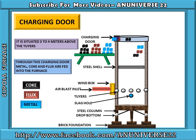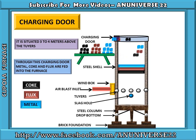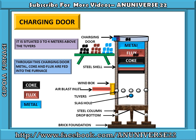Here these are the layers: layer of coke, flux, and metals. This is the arrangement and the way in which metal, flux, and coke are supplied through the charging door to the cupola furnace.